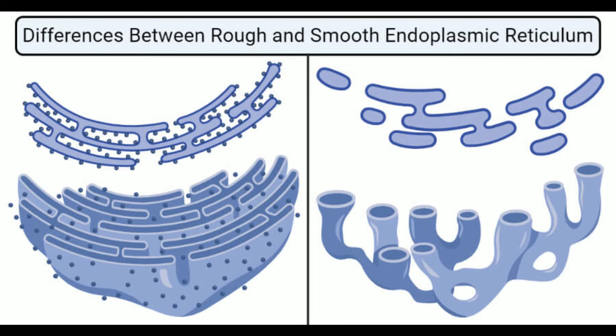Within the lumen of the RER, newly formed proteins undergo slight modifications like cleavage of signal sequences and glycosylation. Some proteins might change their three-dimensional conformation within the lumen. Rough ER is also closely associated with the formation of lysosomes.